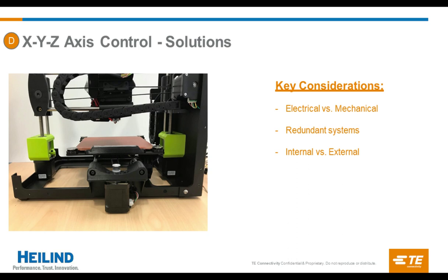Key considerations here include the use of mechanical versus electrical calibration — they use electrical calibration in this area, but you may also want to consider using a mechanical device such as a belt or separate drive to overcome some electrical considerations. There are tradeoffs related to cost and reliability. There's also the importance of having redundant systems — on both the stage and the print head control, the ability to use a redundant system for motors to control all three directions gives additional strength and reliability against in-field failures. Finally, consider when it's appropriate to use internal versus external style connectors, since most electronic and connector components here are exposed to the outside environment and the user.